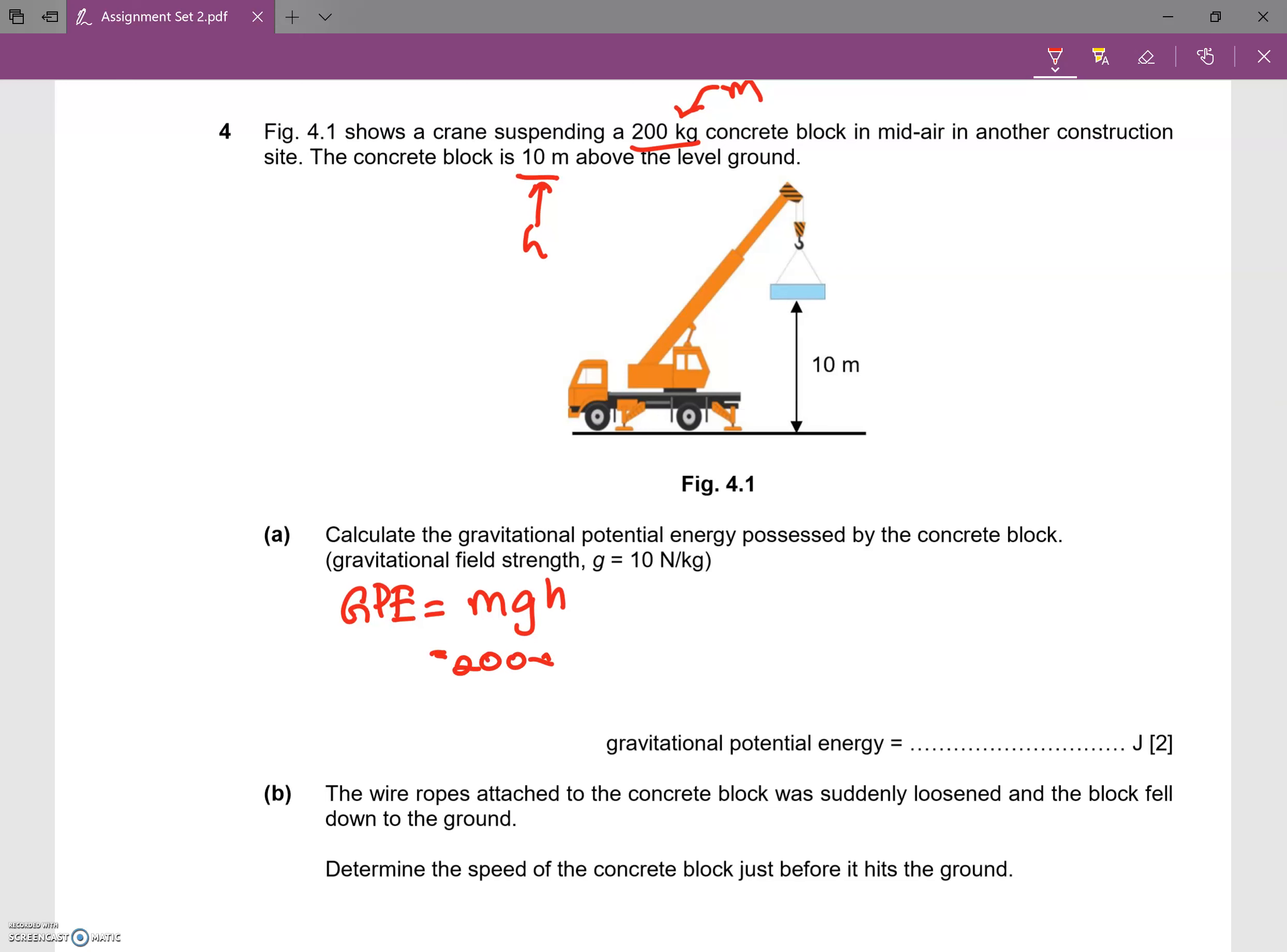So, 200 multiplied by 10, multiplied by the height which is 10, so what you're going to get is 20,000 joules of energy.